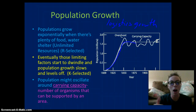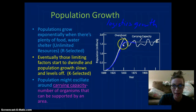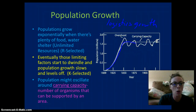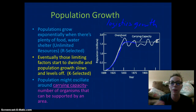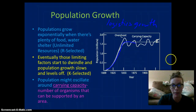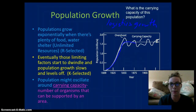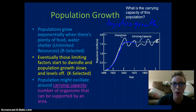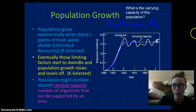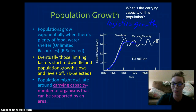Populations may oscillate at or around carrying capacity, which is the number of organisms that can be supported by an environment. Here in this model, we have our carrying capacity — looking at it, it is about 1.5 million, which is where it begins to level off.